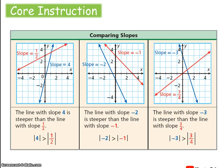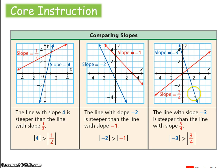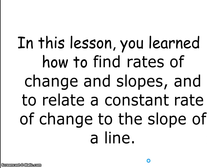When comparing slopes, slope represents the steepness of a line. Even if it's negative, it can have a greater steepness than a positive slope — we compare using the absolute value of the slope. A line with slope 4 is steeper than one with slope one-half. A line with slope negative 2 has greater steepness than one with slope negative 1, because it has a greater absolute value. In this lesson you learned how to find rates of change and slopes and to relate a constant rate of change to the slope of a line.